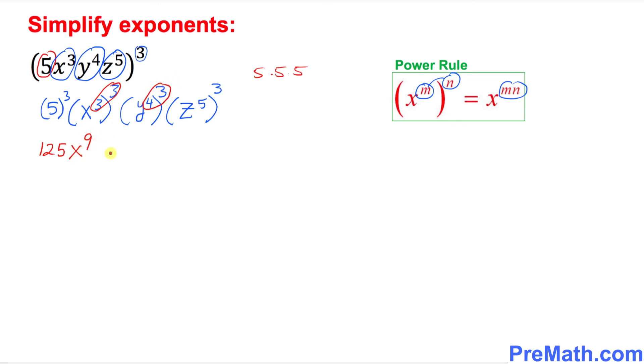y power 3 times 4 is y power 12, and here 5 times 3 is z power 15. And that is our simplified answer.